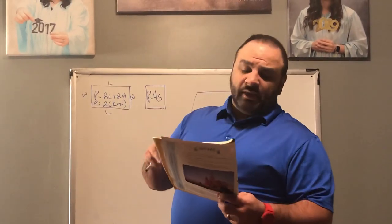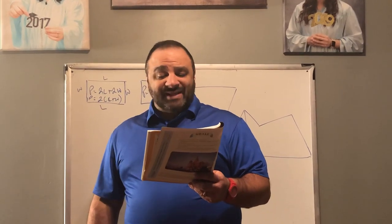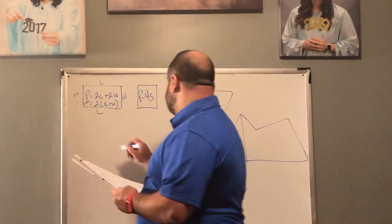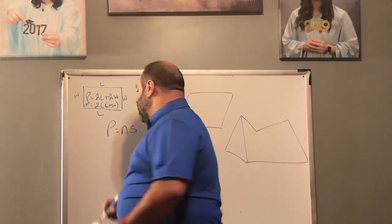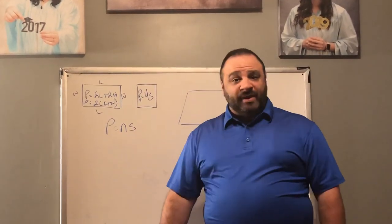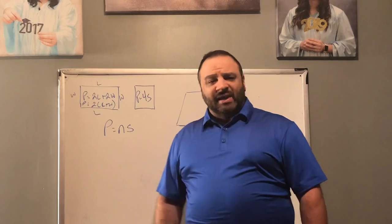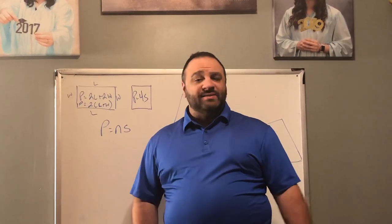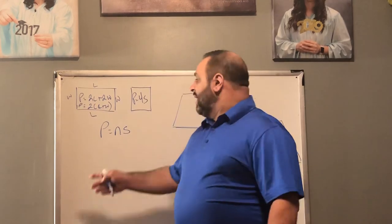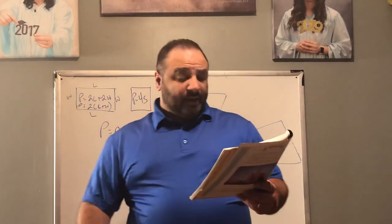Right below that on page two, all the sides of a regular polygon are the same length. If N is the number of sides and S is the length of the side, the perimeter of a regular polygon is P = NS. For example, an octagon is an eight-sided polygon, so N equals 8, and you simply multiply 8 by whatever the length of the side is. Make sure you highlight these three formulas.